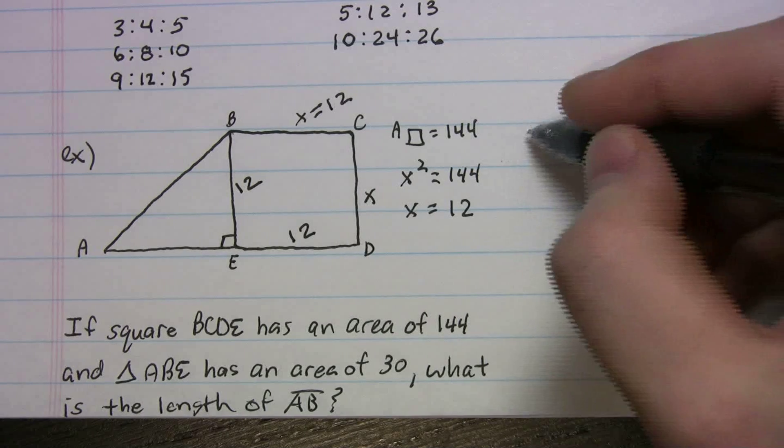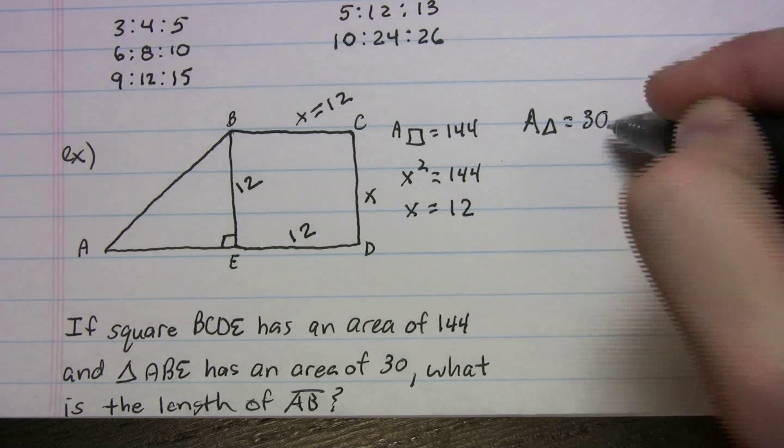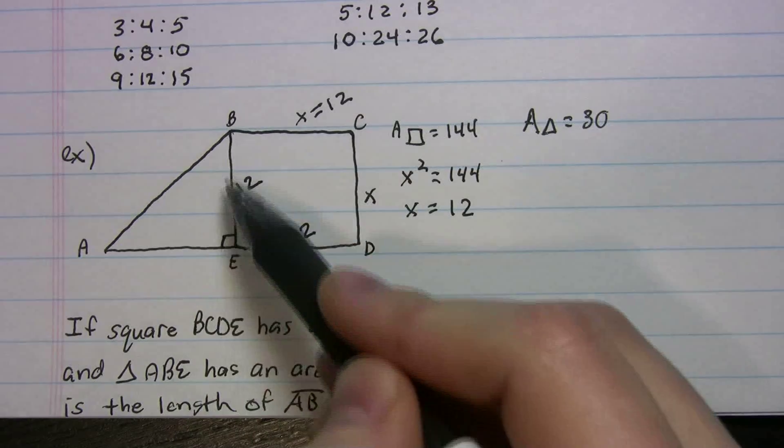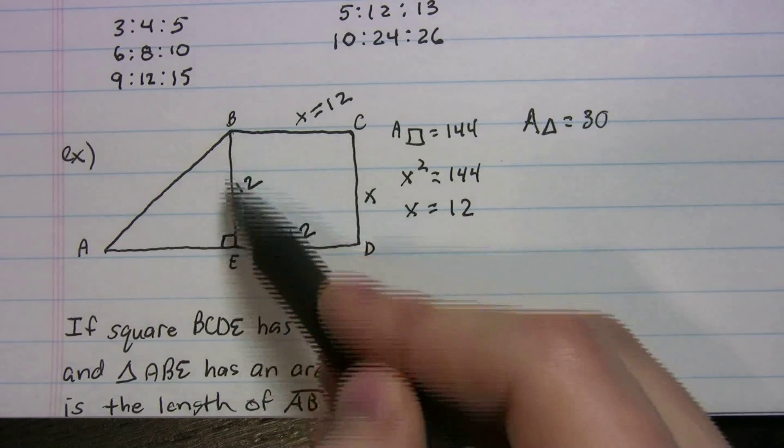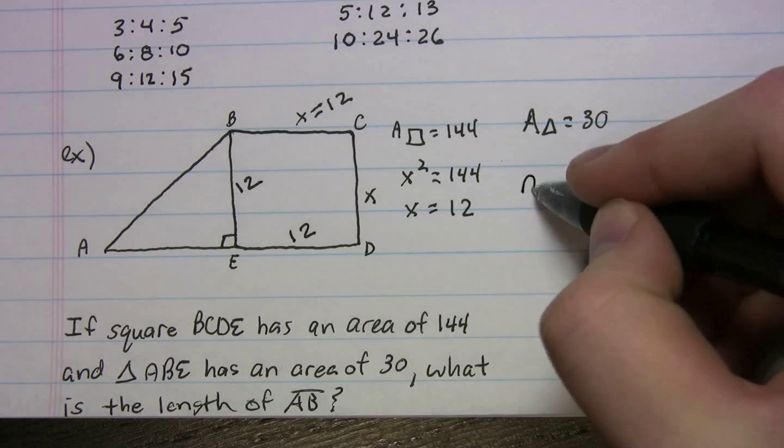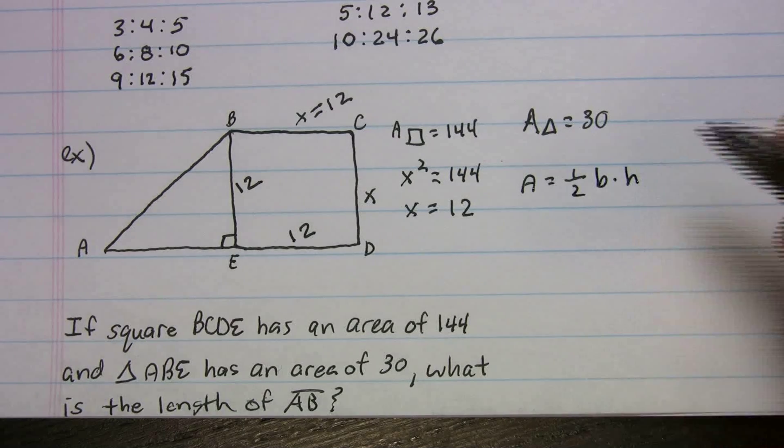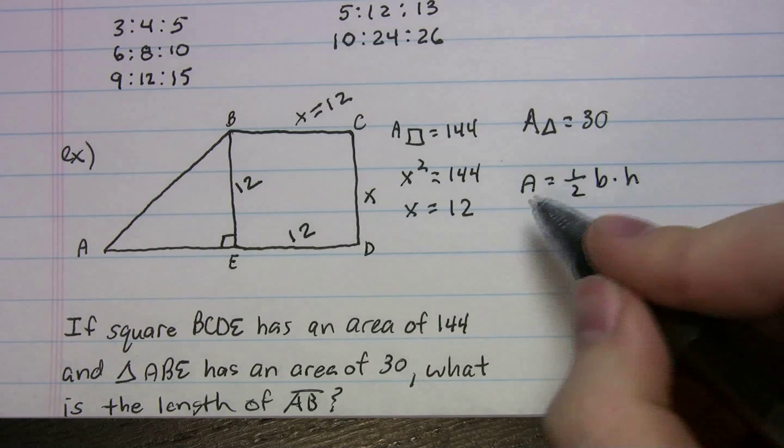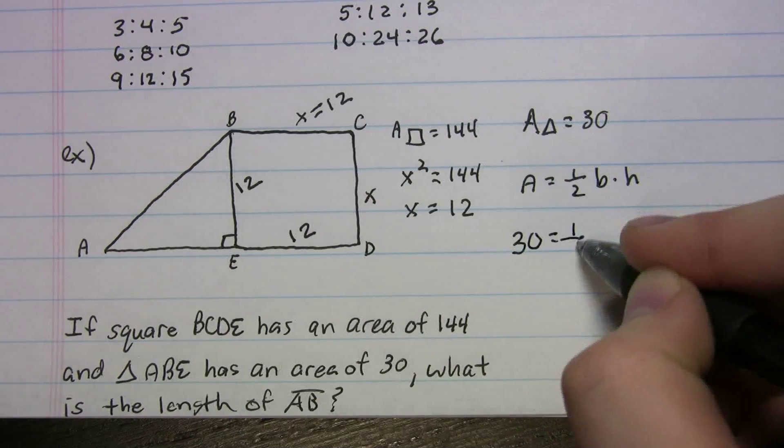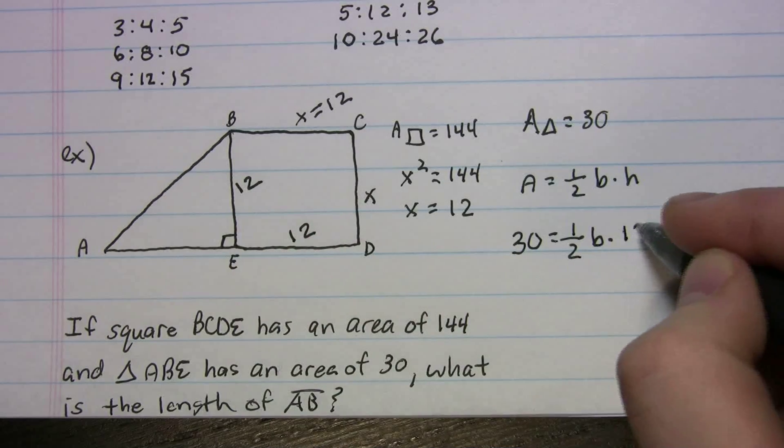And it tells us that the area, and I'll write this here, the area of the triangle is 30. Well, we have one side, we have the height of the triangle, right? What are we missing? We're missing the base. And what is our area of a triangle? Area equals one half base times height. So let's plug in what we know. We know the area is 30, one half. We don't have the base, but we do have the height because we found that out from before. So the height is 12.